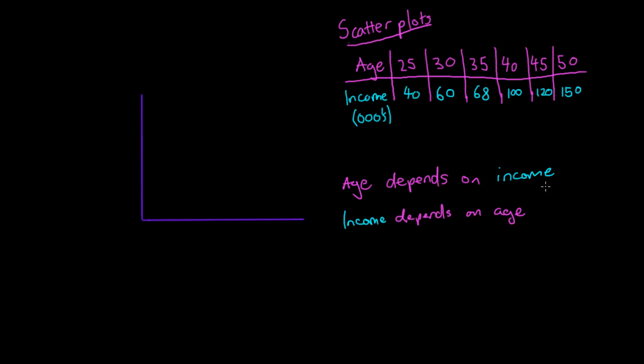If you look at it, it seems silly to say age depends on income. That would mean the more you earned, the older you would be. It seems more logical to say that income depends on age—that is, the older you are, the more income you'll earn.